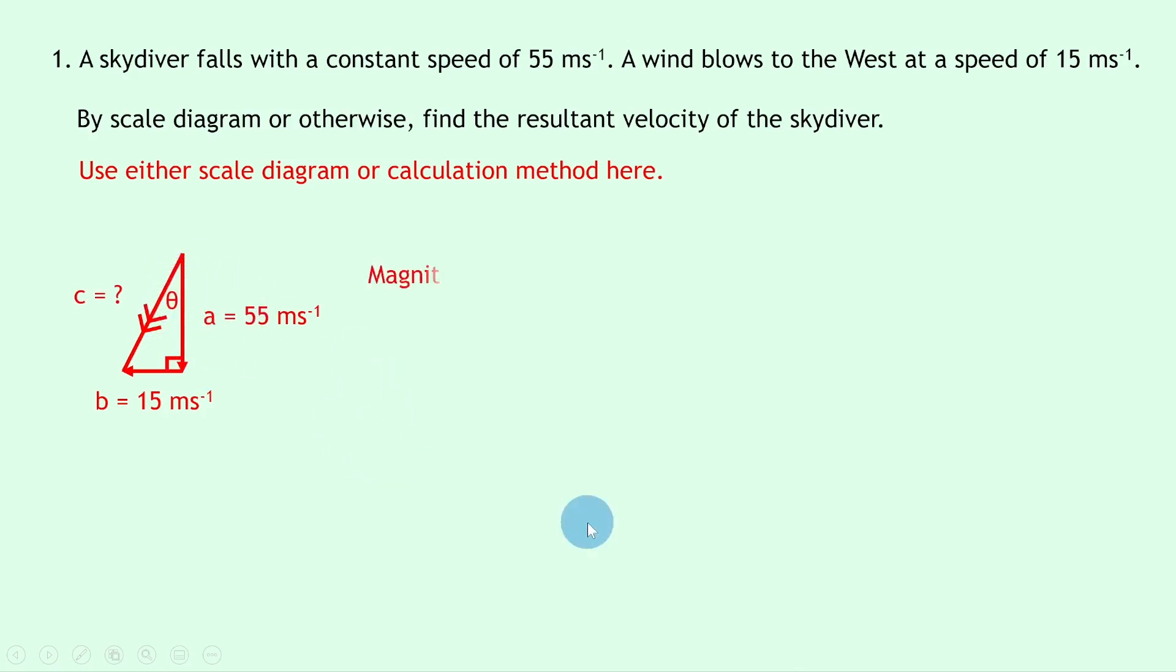To find the magnitude of the resultant velocity, we can do Pythagoras. So we have c squared equals a squared plus b squared, and putting in the numbers we have 55 squared plus 15 squared, which equals 3250. We can then find c by doing the square root of that value, which equals 57 meters per second.